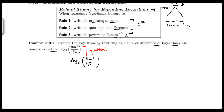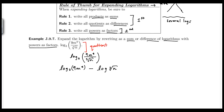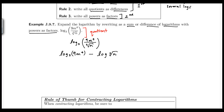Starting with log base three of 9m to the fourth over cube root of n — since we have the log of a quotient, this becomes the difference of two logs: log base three of 9m to the fourth minus log base three of cube root of n. The denominator value goes after the subtraction sign. So we used the quotient rule first.